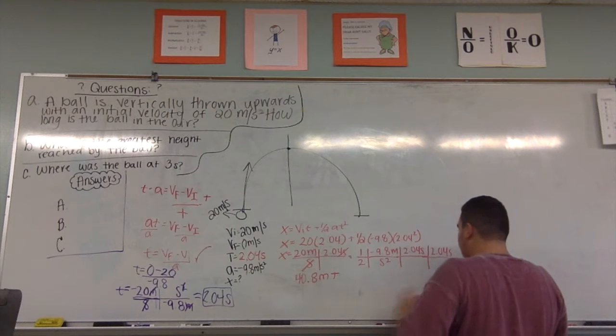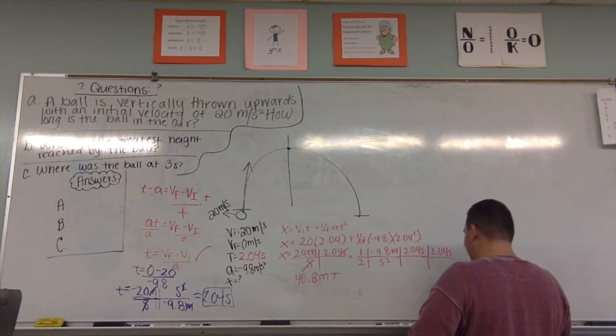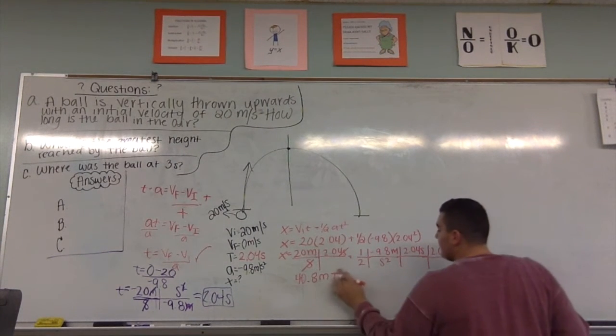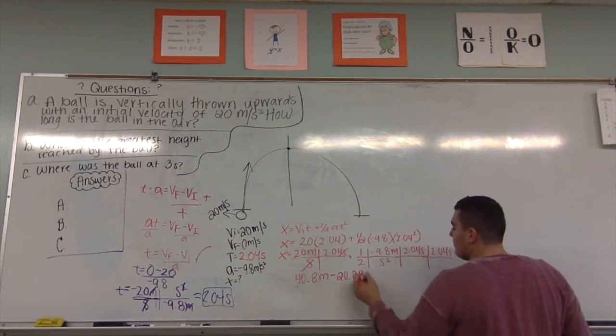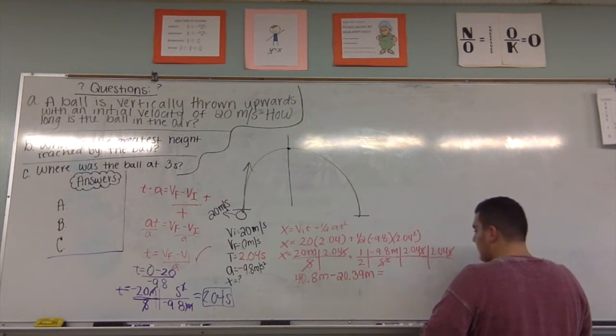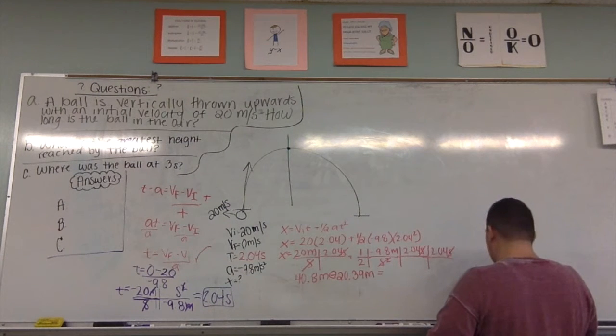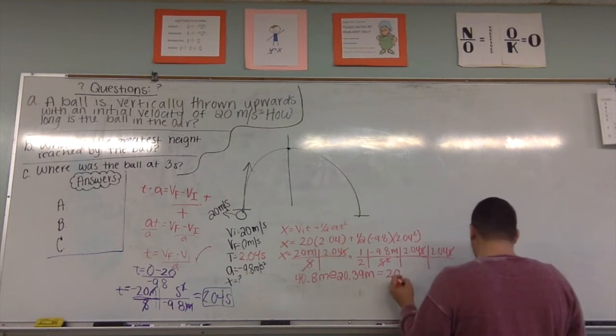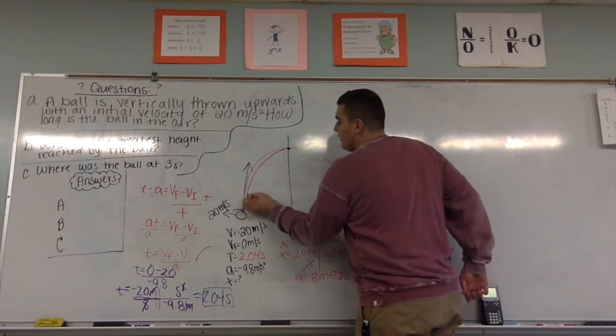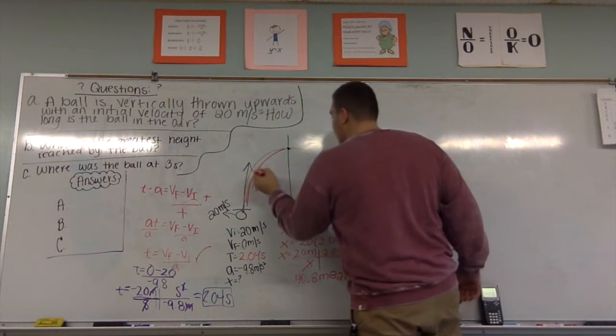Plus, so this whole equation here is negative 20.39. And our s is cancelled, we're left with meters again, and now we can solve for this. So 40.8 minus, from our negative acceleration, 20.39 equals 20.41 meters. So that means that this time right here, our halfway, is 20.41 meters.